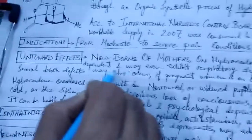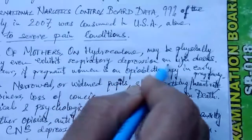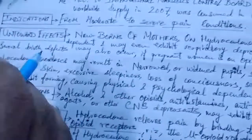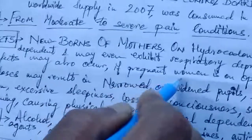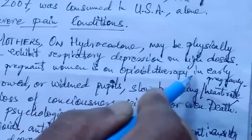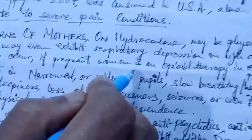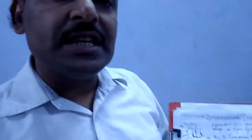Newborns of mothers on hydrocodone therapy may be physically dependent and may even exhibit respiratory depression at high doses. Several birth defects may also occur if a pregnant woman is on opioid therapy in early pregnancy. Therefore, this should be avoided especially in early pregnancy, and pregnant women should avoid all opioids, particularly hydrocodone.